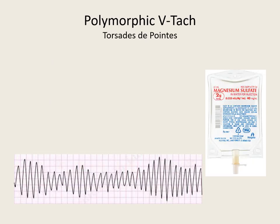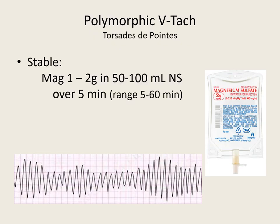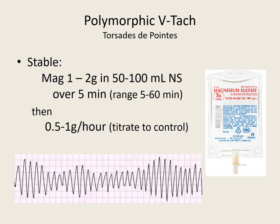Now we're covering torsades de pointes — polymorphic V-tach torsades de pointes. When you see torsades, think of magnesium. If they are stable — no serious signs and symptoms — we're going to use magnesium 1 to 2 grams over 5 minutes. The range is 5 to 60 minutes, but they're in torsades so we need to fix them quickly. If they convert, then we do a drip of 0.5 to 1 gram an hour, titrating to that rhythm to keep them out of torsades.